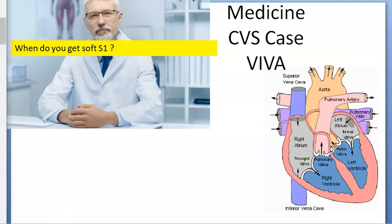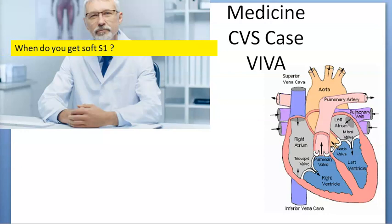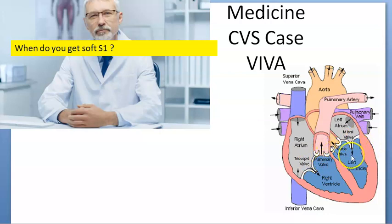When do you get soft S1? For soft S1, the mitral valve and tricuspid valve will have to close softly. So it will be mitral or tricuspid incompetence — incompetence will cause soft S1. Or if there is obesity, if these valves are calcified, it can be soft. If there is a thick chest wall or emphysema, it can be soft. If there is heart block, it can be soft — a prolonged PR interval, bradycardia.